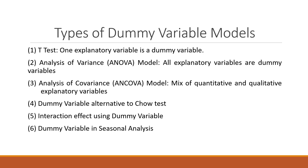Types of dummy variable models include: first, the t-test, where one explanatory variable is a dummy; second, the analysis of variance model, where all explanatory variables are dummies; third, the analysis of covariance model, a mix of quantitative and qualitative explanatory variables; fourth, dummy variable as an alternative to Chow's test to detect structural breaks; fifth, interaction effects using dummy variables; and sixth, dummy variables in seasonal analysis. So six types of models can be created.